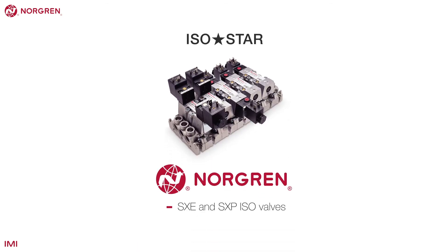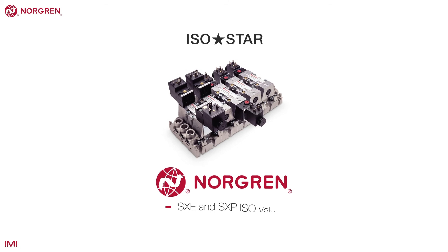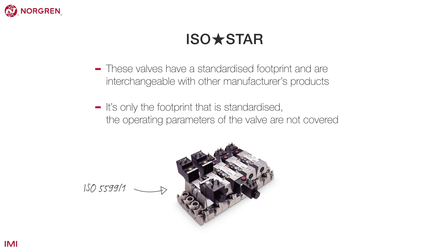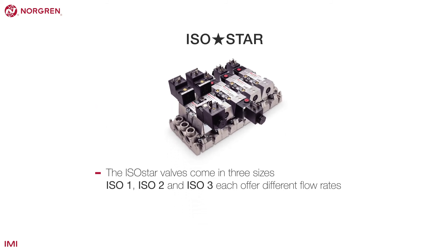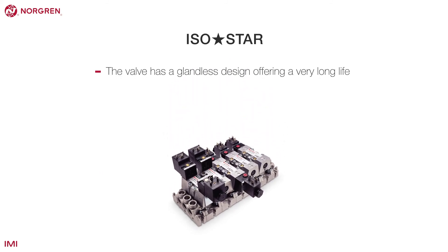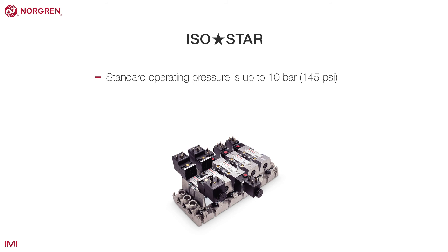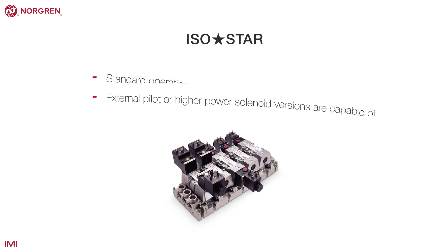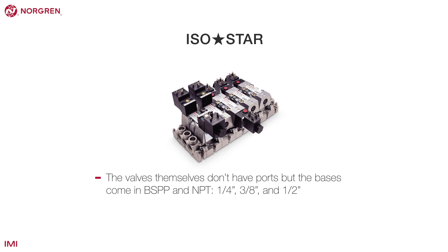ISO-Star is Norgren's range of SXE and SXP ISO valves. The ISO standard means these valves have a standardized footprint and are interchangeable with other manufacturers' products — it's only the footprint that is standardized though, and the operating parameters are not covered. ISO-Star valves come in three sizes: ISO 1, 2 and 3, each offering different flow rates; size 4 is available in the UM22000 series. The valve has a glandless design offering very long life with fast, accurate, repeatable switching. Standard operating pressure is up to 10 bar or 145 PSI, but external pilot or higher power solenoid versions can operate up to 16 bar or 232 PSI. The bases come in BSPP or NPT in quarter-inch, three-eighths and half-inch sizes.